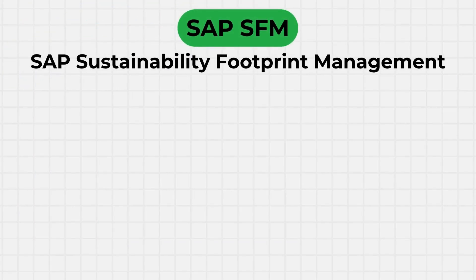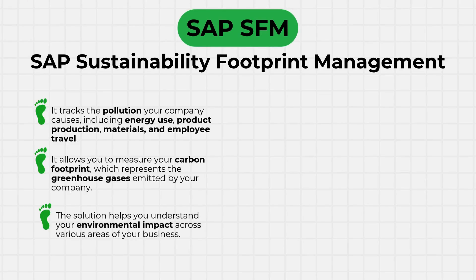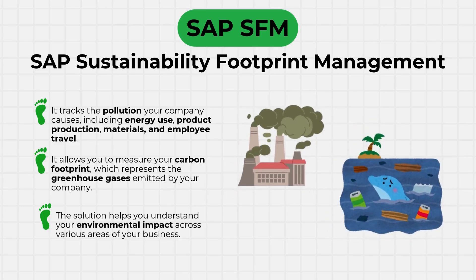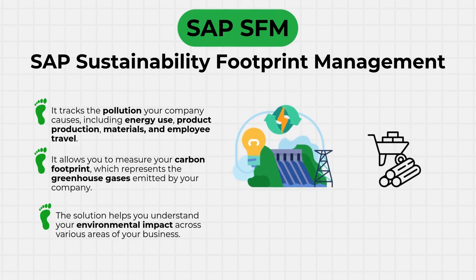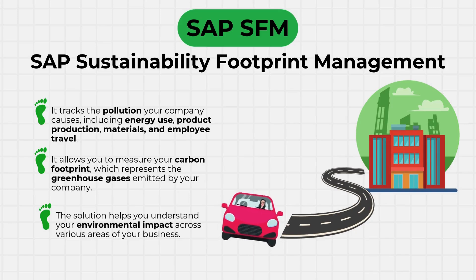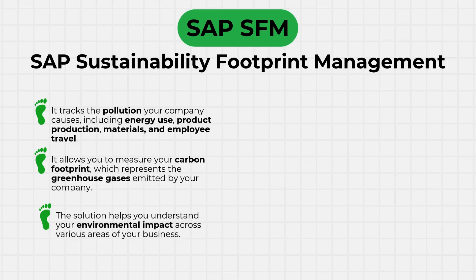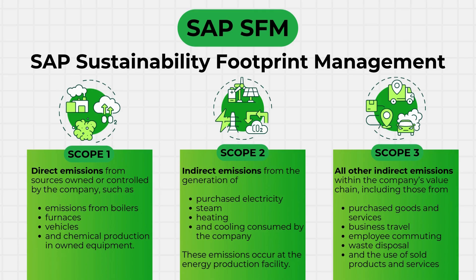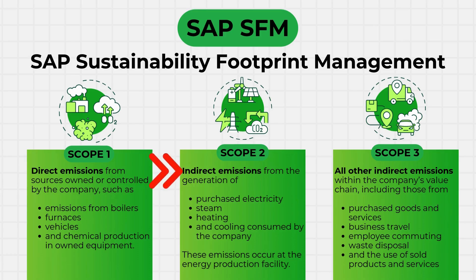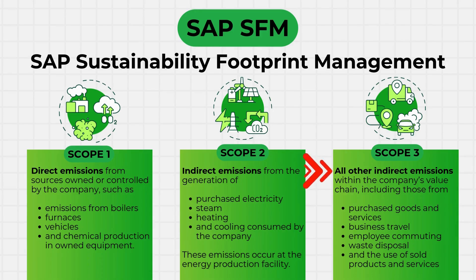The next tool is SAP Sustainability Footprint Management. Imagine you run a business and want to know how much your company is contributing to climate change. SAP SFM helps you track all the pollution your company causes — from the energy used to produce products, the materials you buy, even how your employees travel to work. It lets you see your carbon footprint, measuring all the greenhouse gases your company puts into the air. SAP SFM can depict scope 1, scope 2, and scope 3 emissions: direct emissions from sources owned by the company such as company vehicles, indirect emissions like purchased electricity, steam, and heating, and all other indirect emissions such as purchased goods, business travel, and waste disposal.